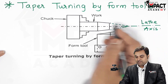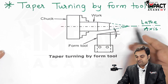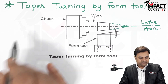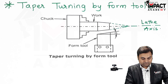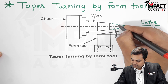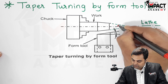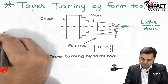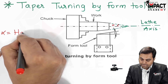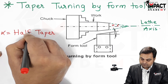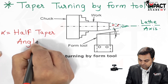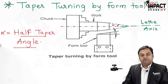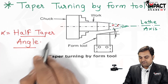Now, when I have extended this conical surface on the lathe axis — this is the axis or center line of the lathe machine — then we have this half angle which is called as alpha. Alpha is called as the half taper angle.